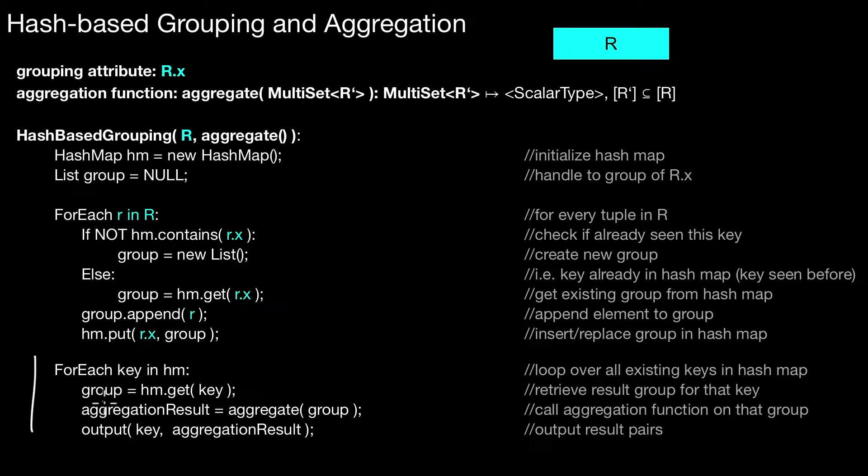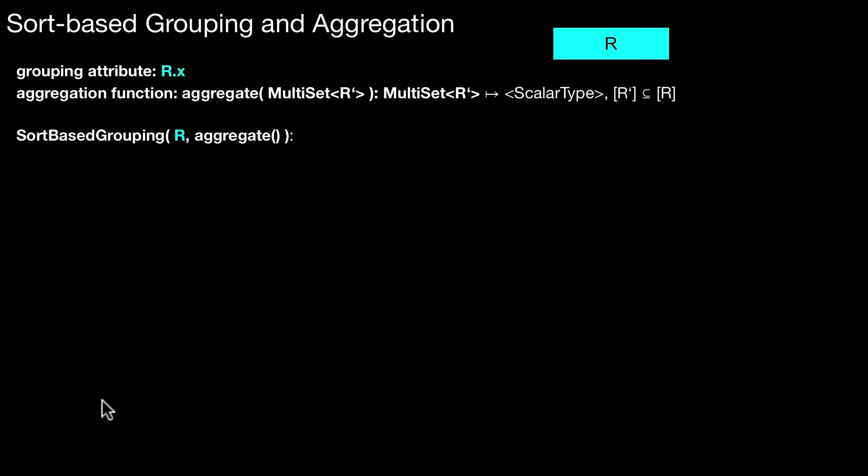The second way to compute grouping and aggregation is to use a sort-based method. How does that work? The same requirements as before: we have our grouping attribute, we have an aggregation function. How do we call this method? Again, input R and the aggregation function.